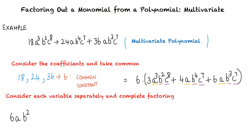Finally, we consider the variable c. We have c to the power 8 in the first term, c to the power 7 in the second term, and c to the power 7 in the third term. Hence, we can take c to the power 7 as common from the polynomial.